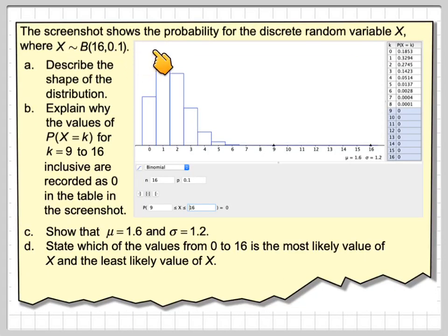The screenshot shows the probability for the discrete random variable X, where X is binomially distributed with the number of trials being 16 and the probability of success being 0.1. So here we've got the distribution.